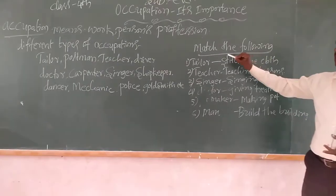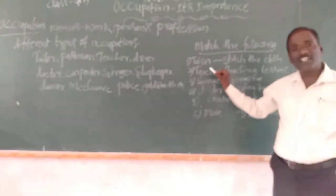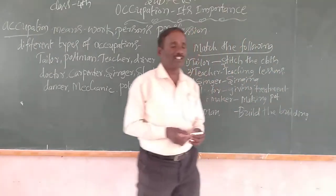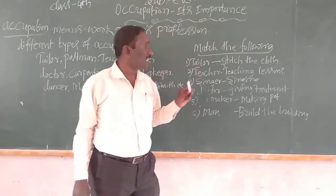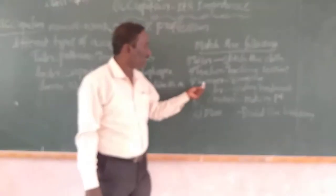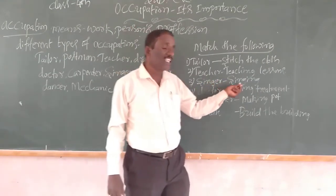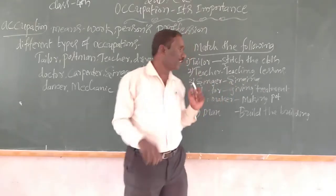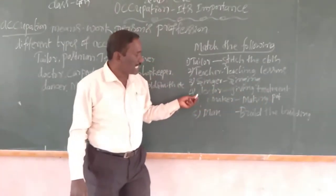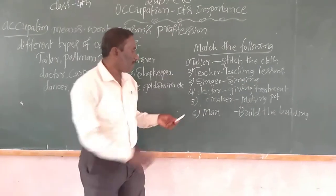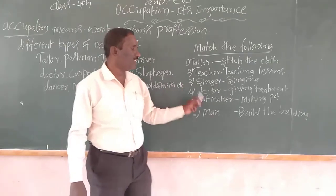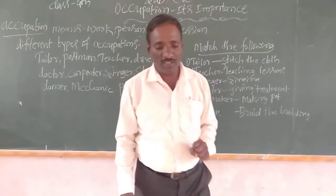Students, understand this match the following. Tailor — what does the tailor do? Tailor stitches the cloth. Teacher — what does the teacher do? Teacher teaches the lesson and talks to the children. Singer — what is the occupation of singers? Singer sings a melodious song. Doctor — doctor gives treatment to the patient. Pot maker — pot maker makes a pot. Mason — builds the building. These occupations are very important.